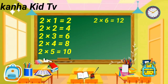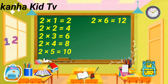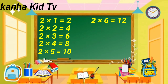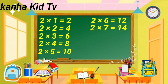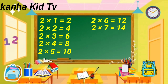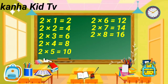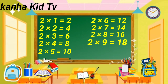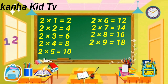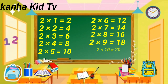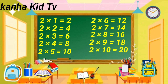Two sixes are twelve. Two sevens are fourteen. Two eights are sixteen. Two nines are eighteen. Two tens are twenty.